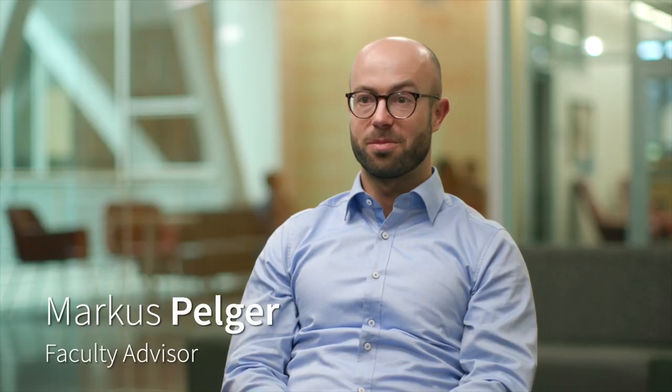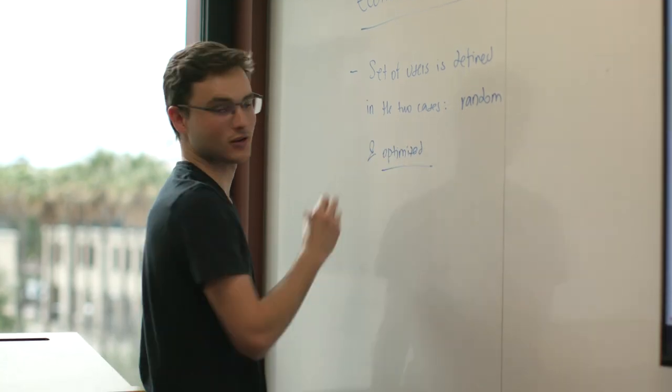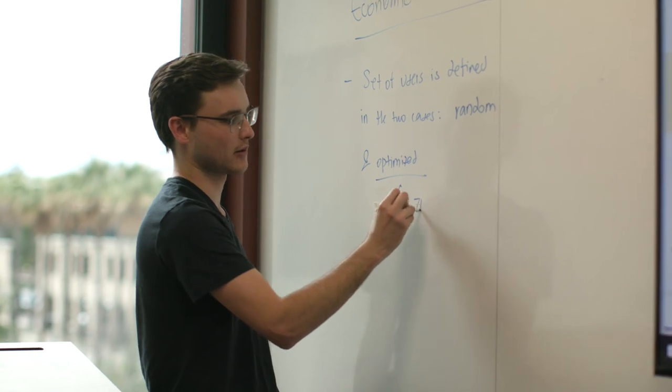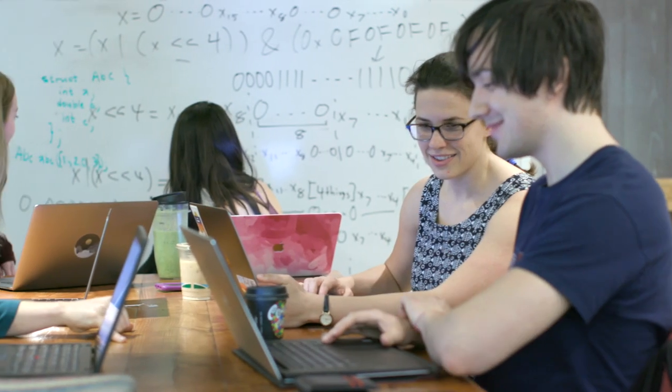MS&E 108 is a senior project class here at Management Science and Engineering. Students work with a client and they have to solve a problem for the client. They just get a real-world problem. They define the problem, they define the data, they define the solution, and they define what success looks like. You're not getting a syllabus on day one — we have to create something that's valuable for a client. That's really our mission.